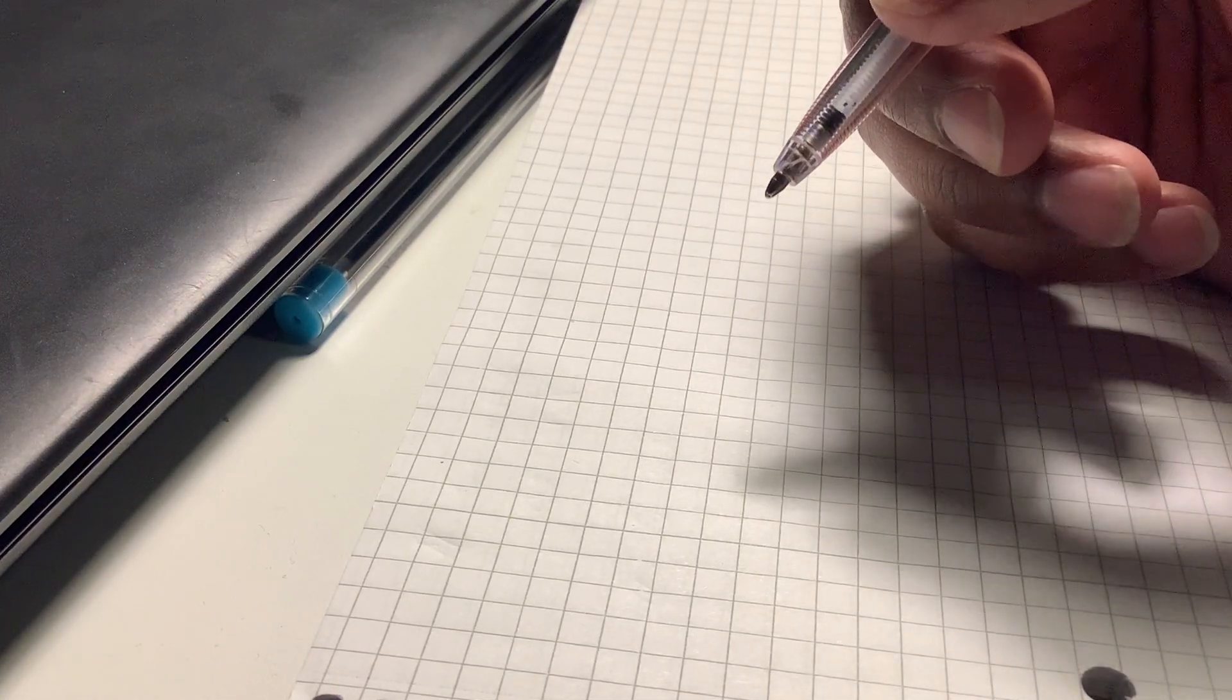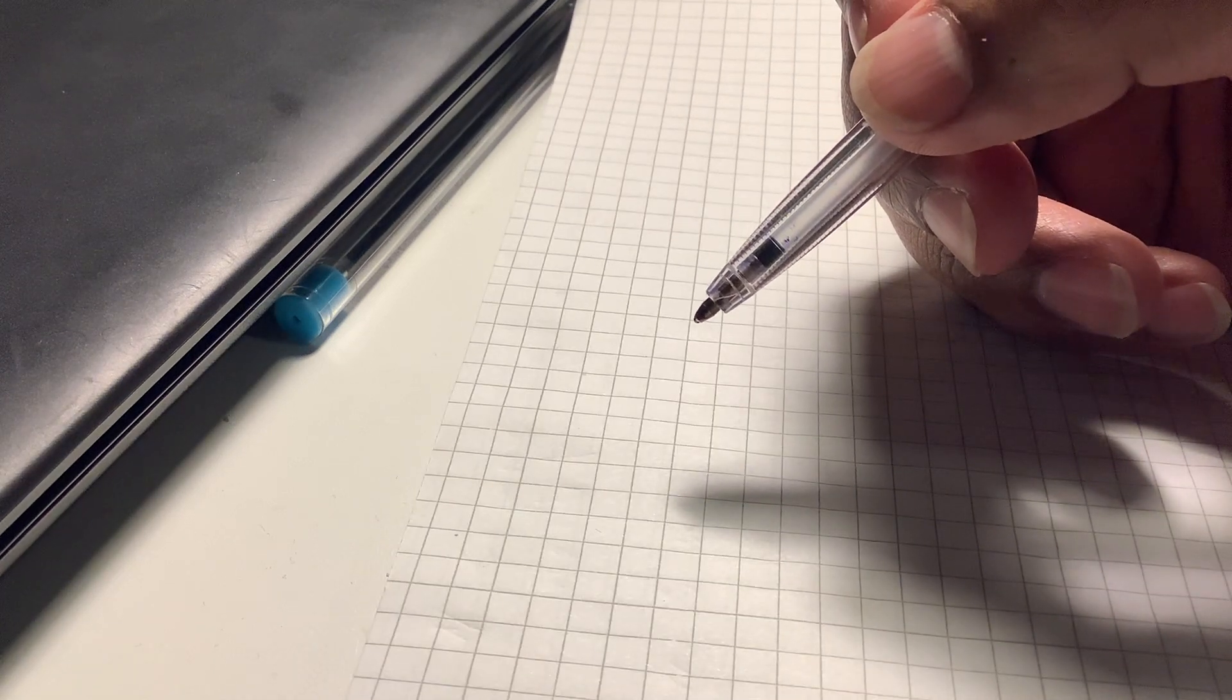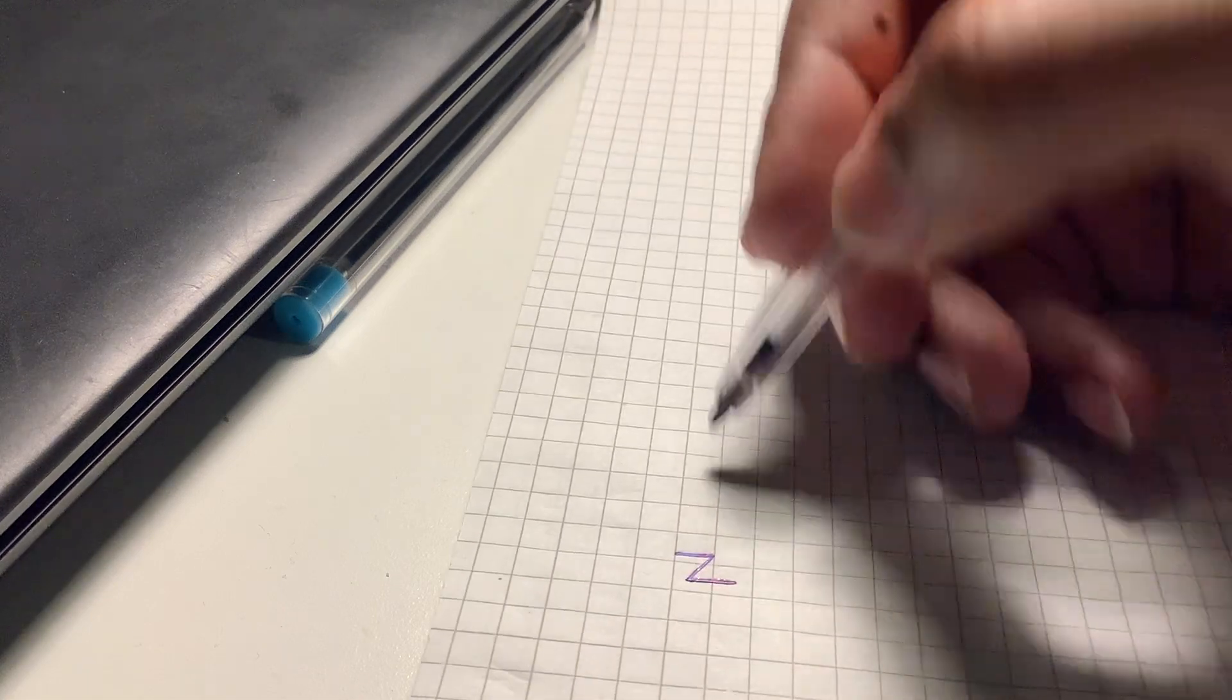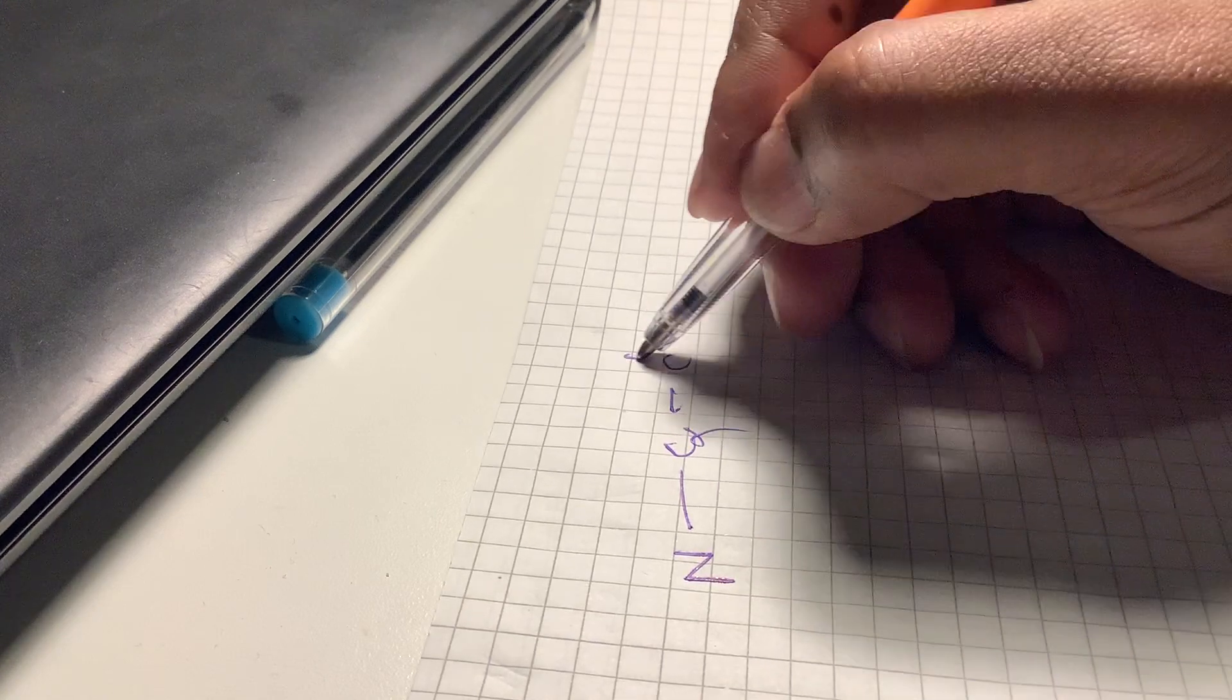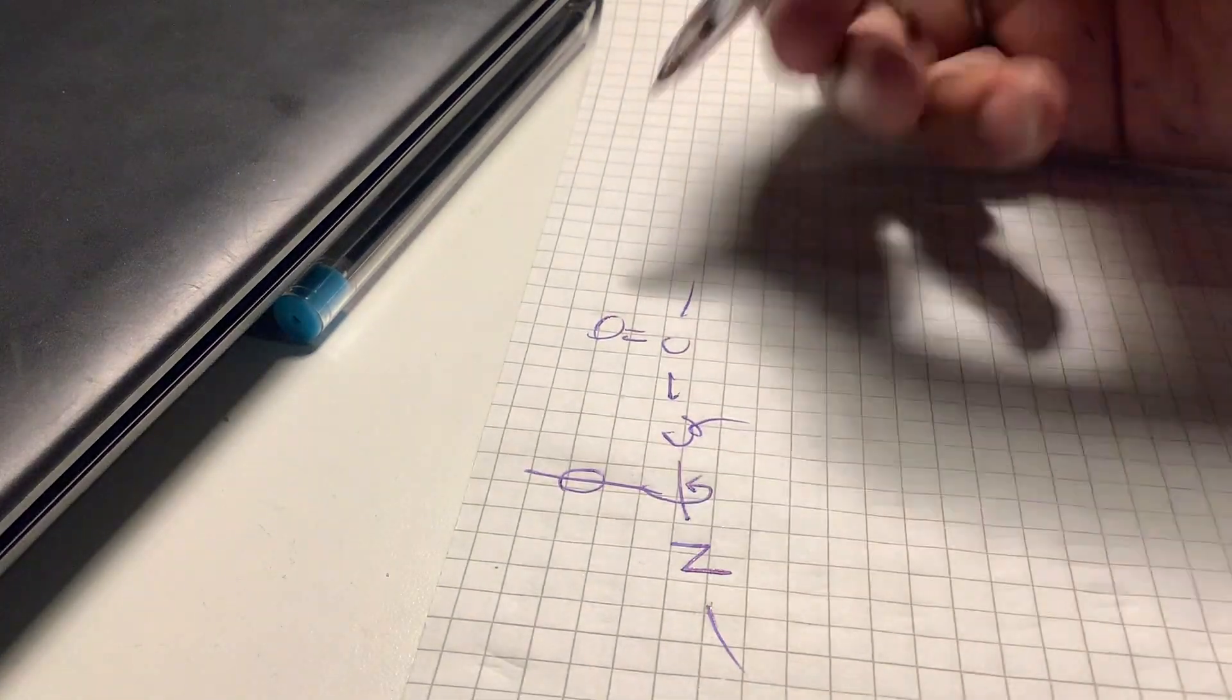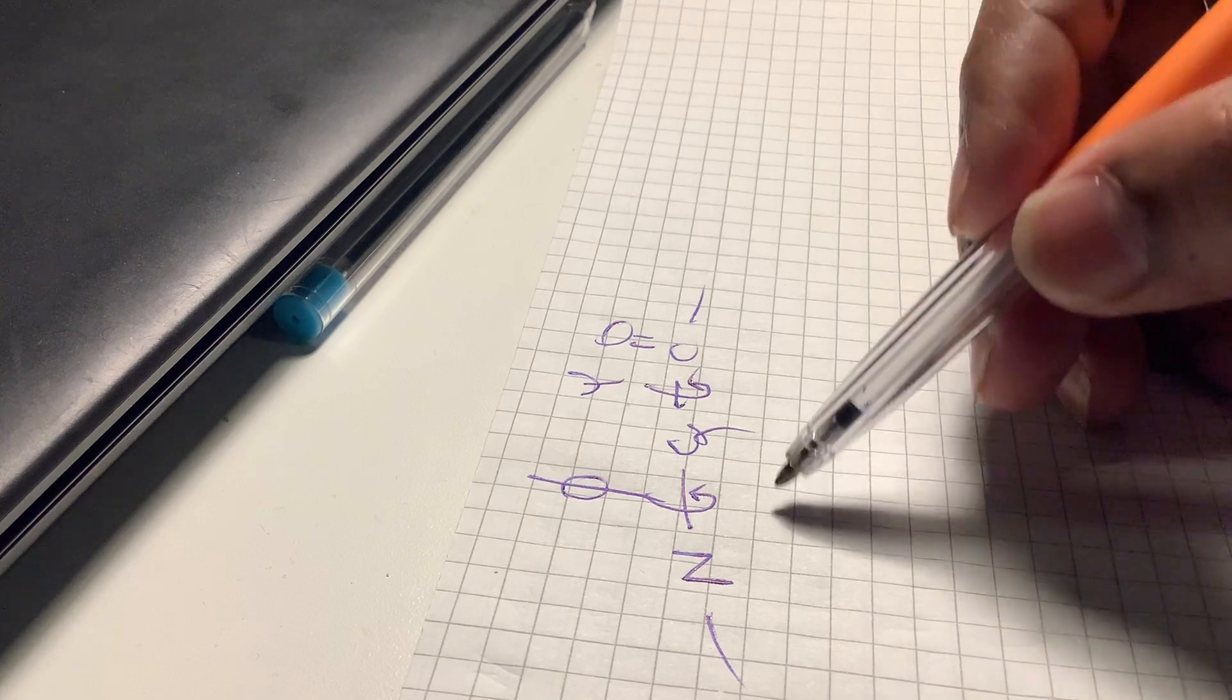If you have any problem to understand phi angles or psi angles, you don't need to know a lot of things. Just remember the angle names: N, C alpha, then C, O. Maybe you already know that this is the rotation phi angle and this rotation is the psi.